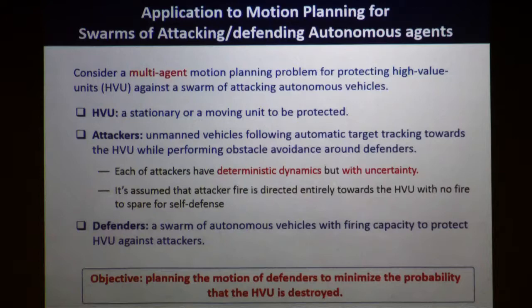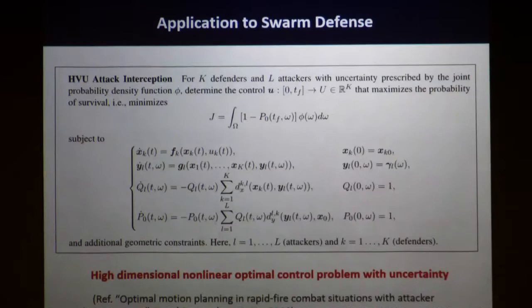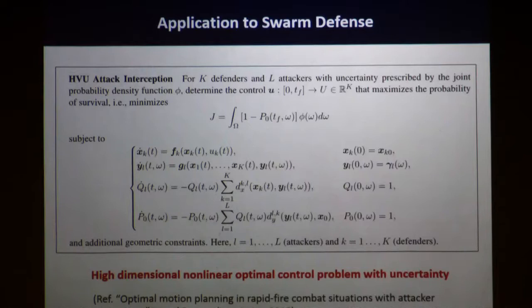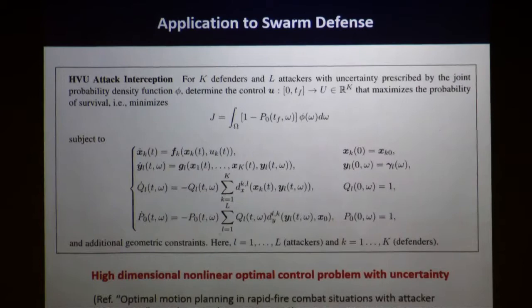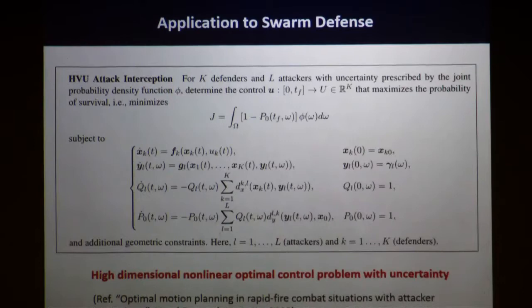Skipping technical modeling details — interested readers can refer to the paper published last year in Networks Research and Logistics — the practical problem can be mathematically modeled as an uncertain optimal control problem with uncertain states representing the probability of survival of the attacker and the high-value unit. Using the framework presented, we can solve this problem. Here is a simulation result for one scenario.